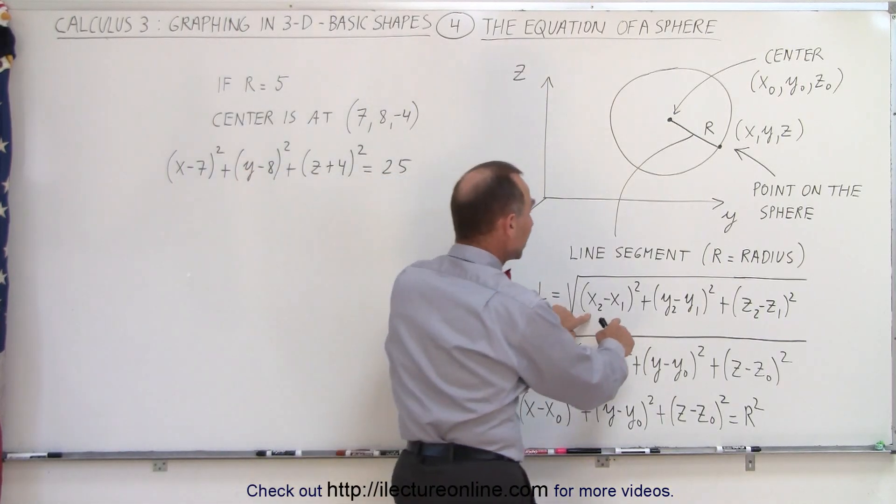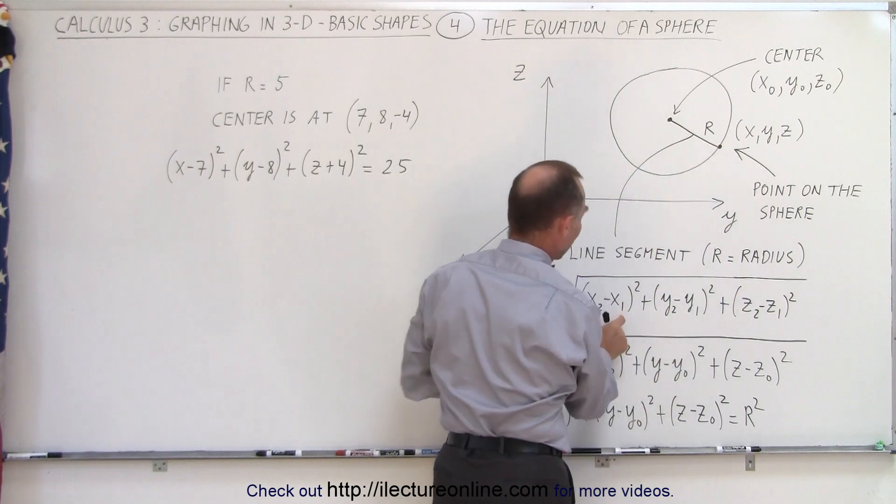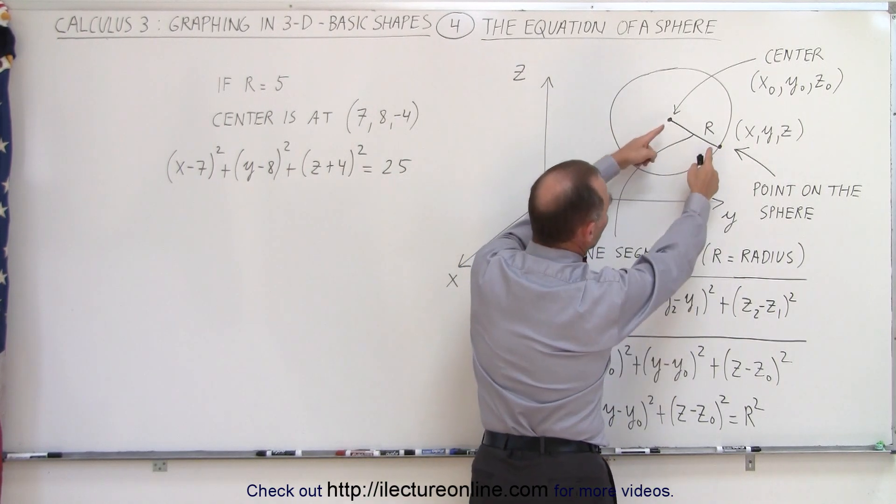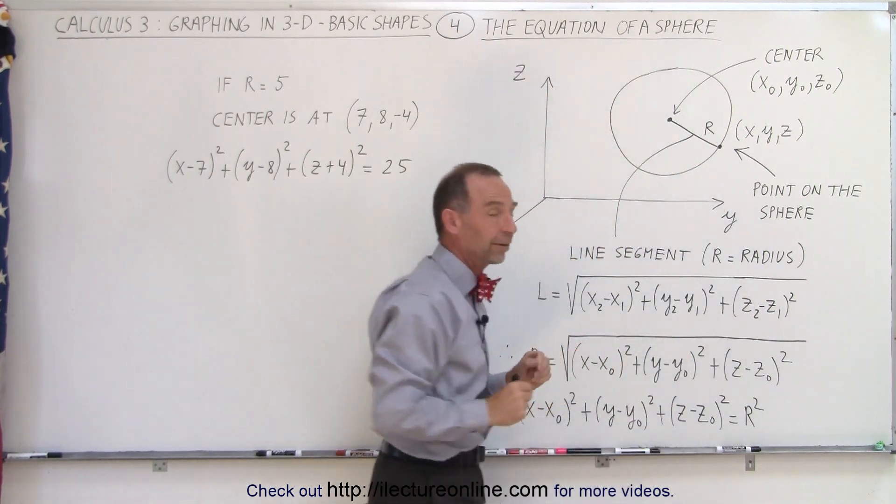So we take the x coordinates of the endpoints, we take the difference between those x coordinates, and we square that. We take the difference of the y coordinates, and we square it. We take the difference of the z coordinates, and we square it.